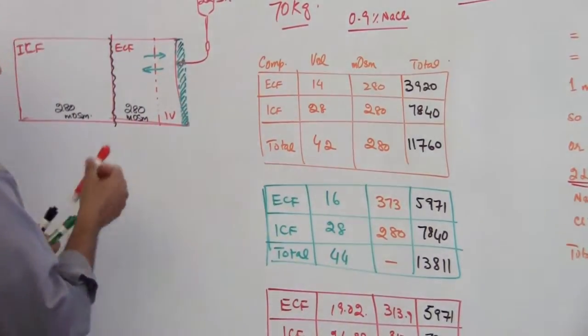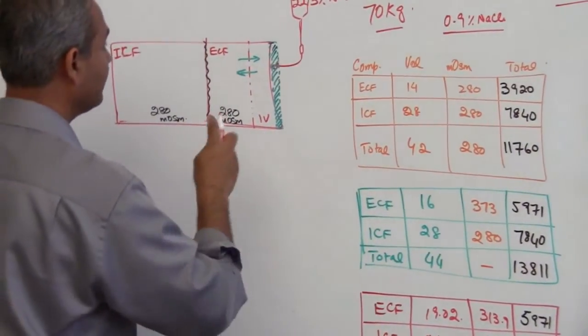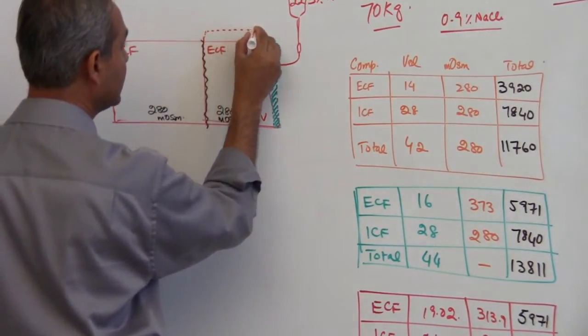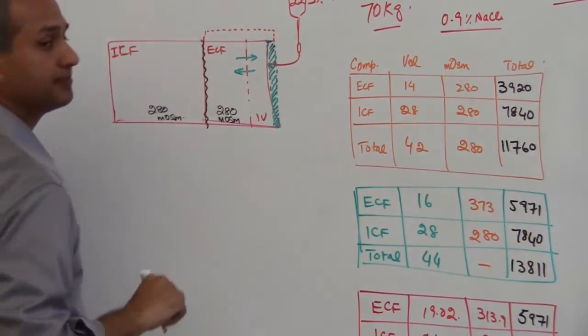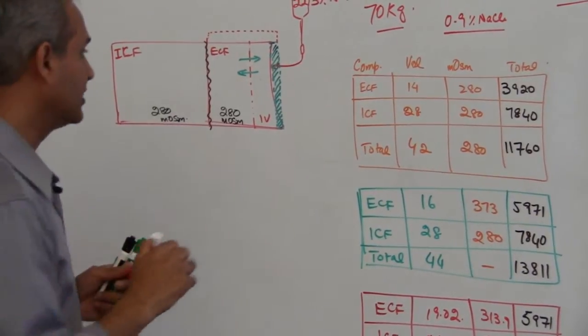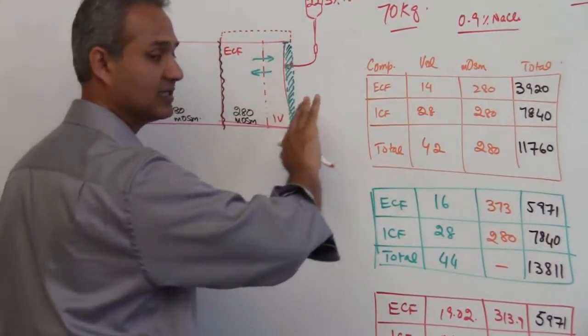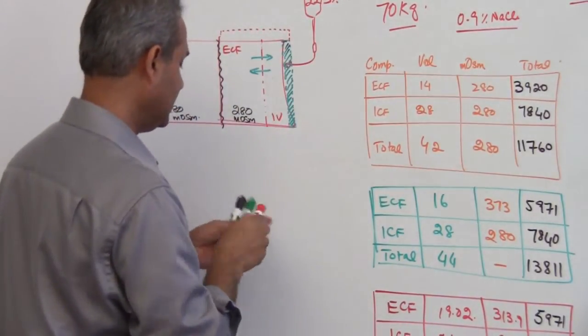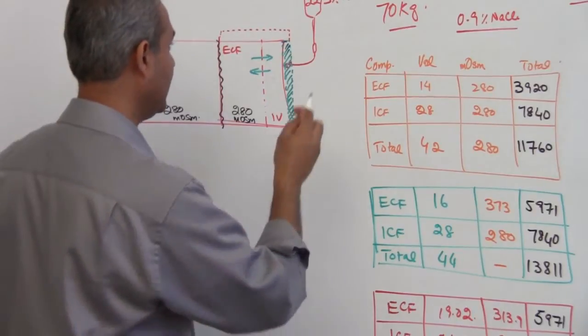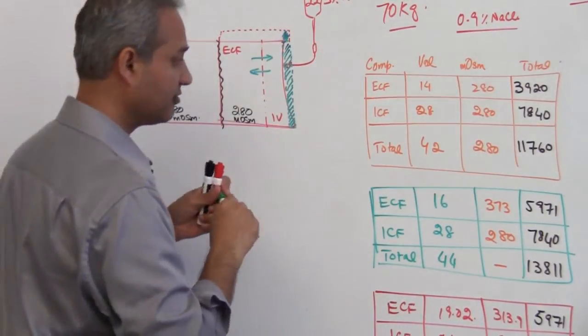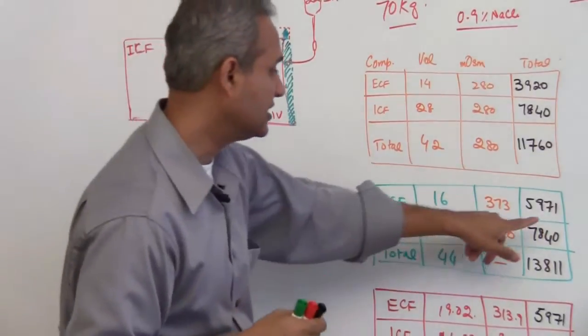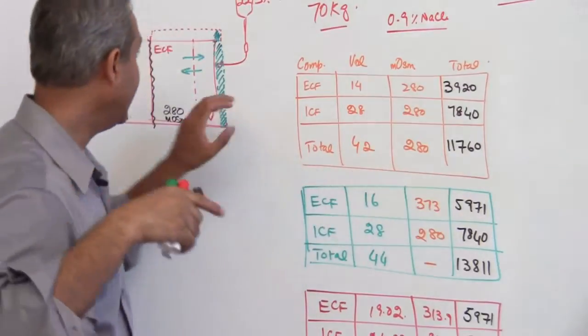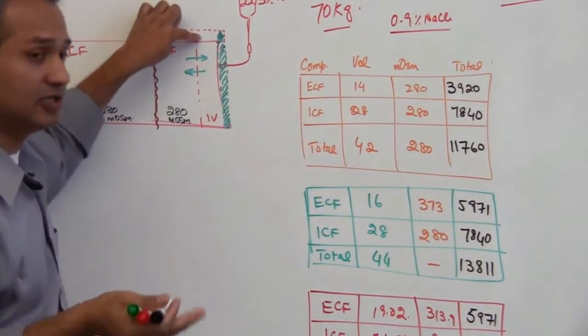What that means is that enough sodium has come in that osmolarity in this area has increased. Two things have increased: the fluid volume has increased, extracellular fluid volume has increased - that is depicted by this green shadowed area here - and the second thing which has increased is